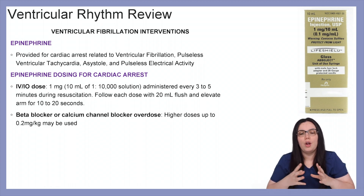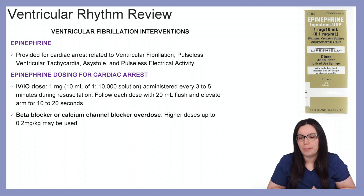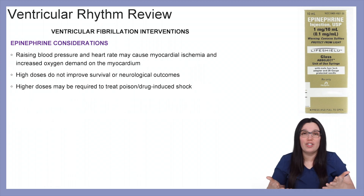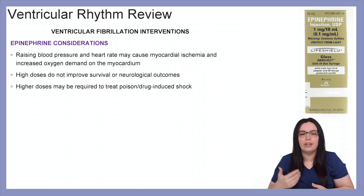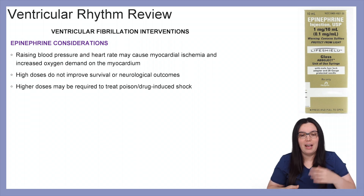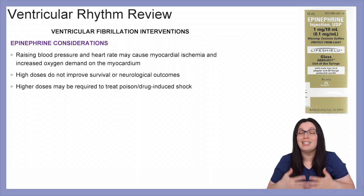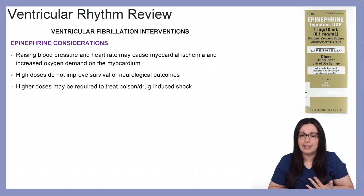With beta blocker or calcium channel blocker overdose patients, higher doses are required to be effective, usually 0.2 mg per kg. Considerations for epinephrine: rising blood pressure and heart rate may cause myocardial ischemia and increased oxygen demand of the myocardium. High doses do not improve survival rates or neurological outcomes, and higher doses may be required if poison- or drug-induced shock is present.